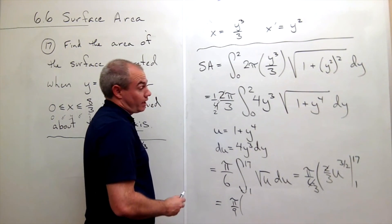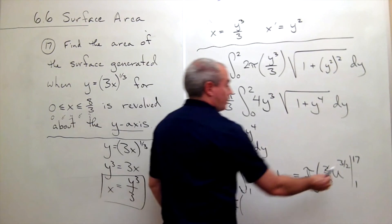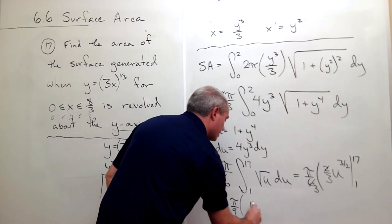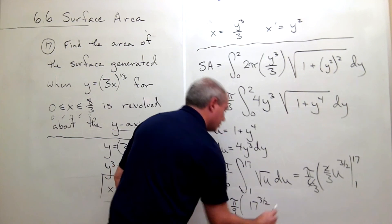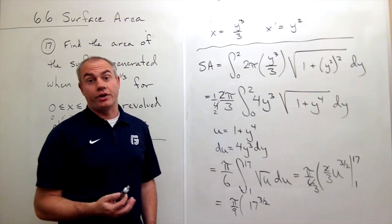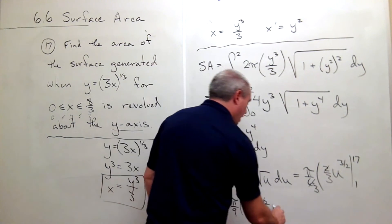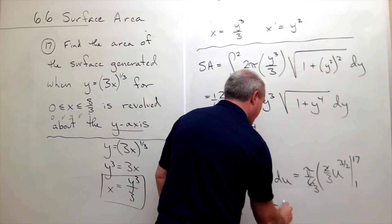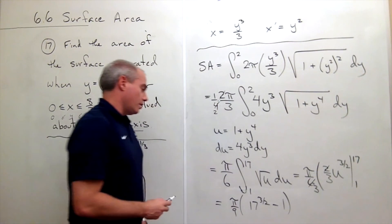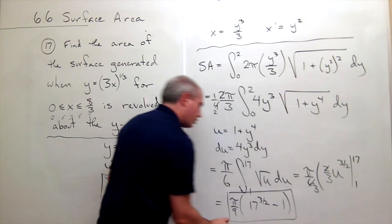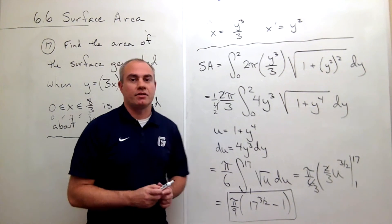Then we've got, plug in the 17. When I plug in the 17, I get 17 to the 3/2. Unfortunately, 17 to the 3/2 isn't a very nice number, so I'll just leave it looking that way. Minus, plug in the 1, and I get 1. And that's about as good as it gets for this answer. So we'll just leave it in this form.